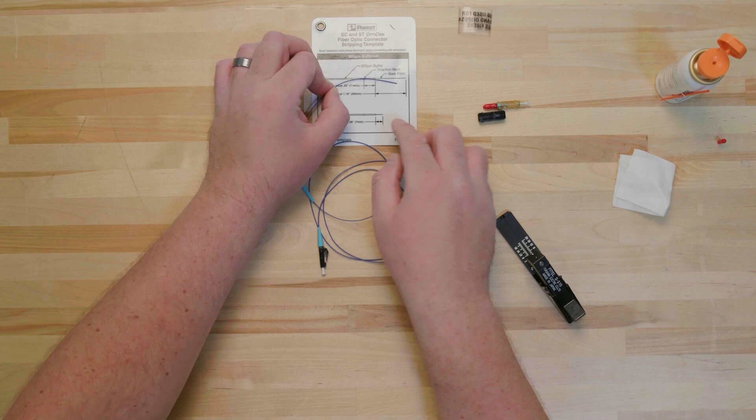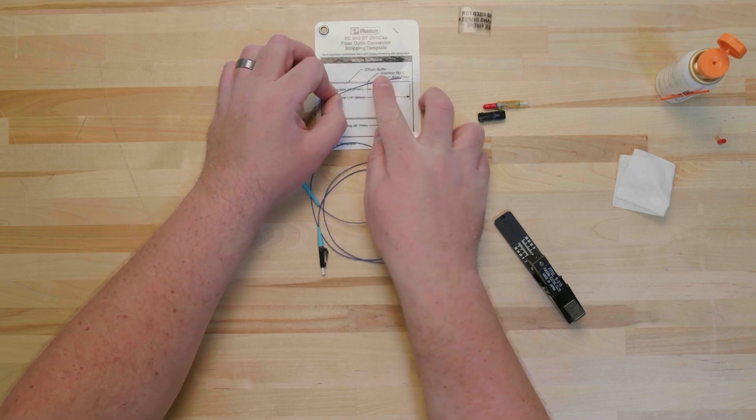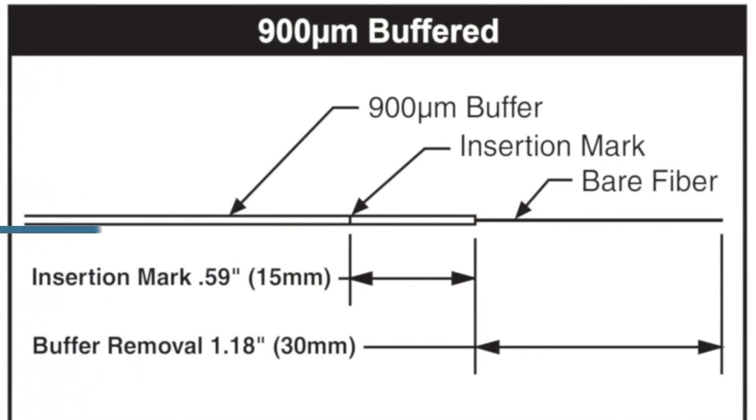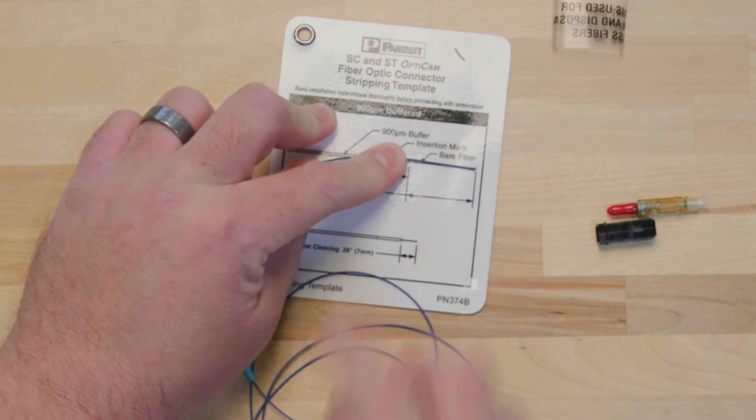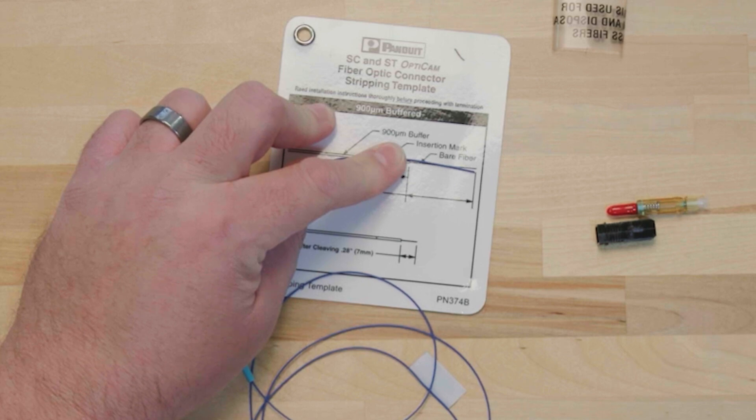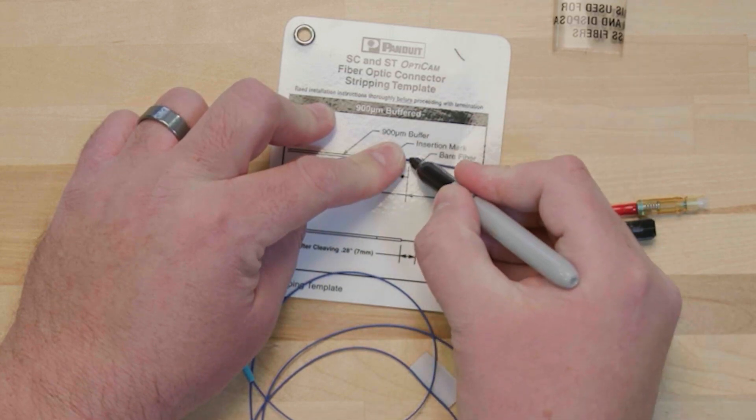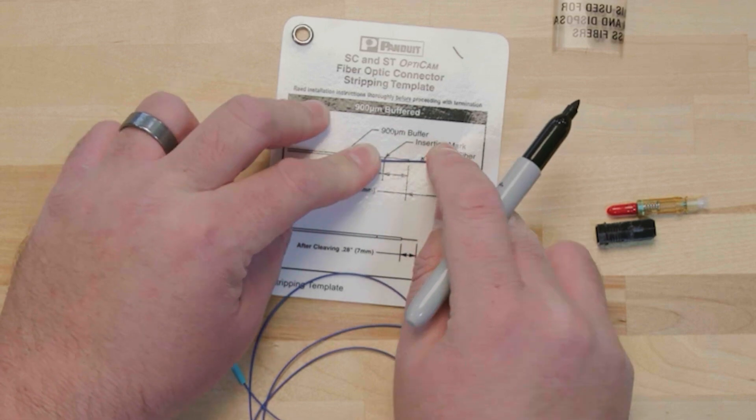Next, use the SC stripping template card that is provided with every OptiCam kit to mark the fiber. The first mark is the stripping mark, which will indicate how much of the buffer should be removed. Lay the fiber strand on the SC stripping template. Make a stripping mark on the buffer 1.18 inches or 30 millimeters from the end of the fiber strand.